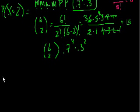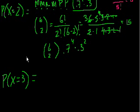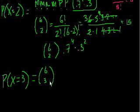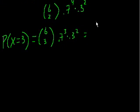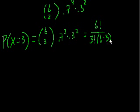The probability that I make exactly three shots follows the same logic. The number of ways is 6 choose 3. And in order to make three shots, I also miss three shots. So the probability of each permutation is 0.7 cubed times 0.3 cubed. Therefore, P(x=3) equals 6 factorial over 3 factorial times 3 factorial, times 0.7 cubed times 0.3 cubed.